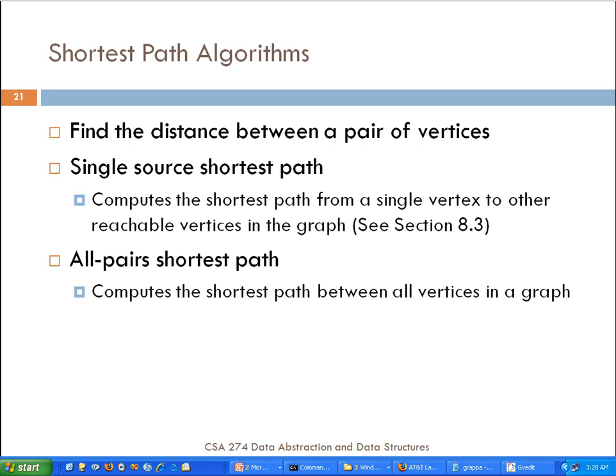There are a couple of different ways this can be done. One class of shortest path algorithms is single source shortest path — starting from a specific node, what is the shortest path from that node to all the other nodes? Another type is called all-pairs shortest path, which computes the shortest path between all vertices in a graph.